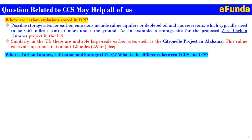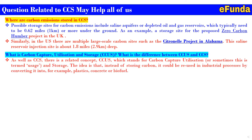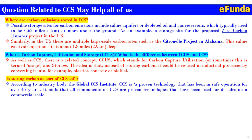Second question: what is carbon capture utilization and storage (CCUS), and what is the difference between CCUS and CCS? Related to CCS is CCUS — carbon capture utilization and storage — where instead of just storing carbon, it could be reused in industrial processes by converting it into, for example, plastic, concrete, or biofuel. Third question: is storing captured carbon in CCS safe? According to the Global CCS Institute, CCS is a proven technology that has been in safe operation for over 45 years, with all components proven on a commercial scale.